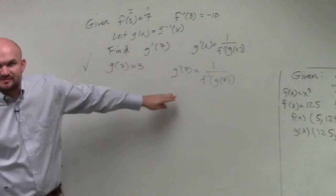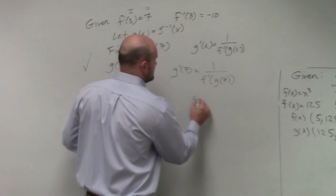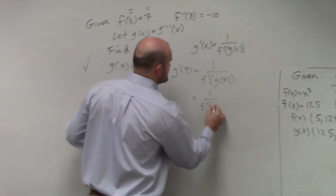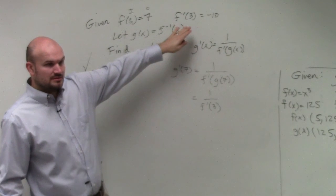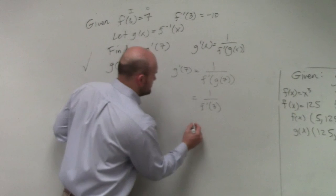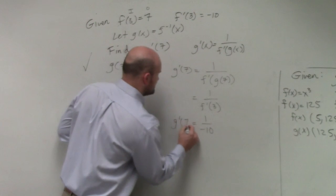Well, do we know what g of 7 is? Yeah, of course, g of 7 is 3. So that's 1 over f inverse of 3. Well, does our problem tell us what 3 is? Yes, negative 10. So therefore, it's 1 over negative 10, g prime of 7.